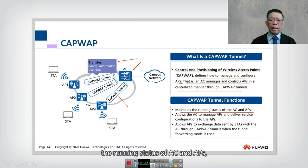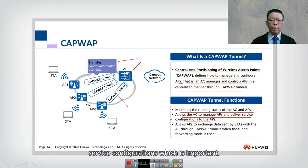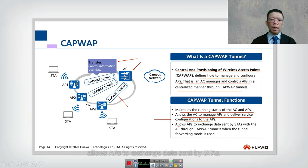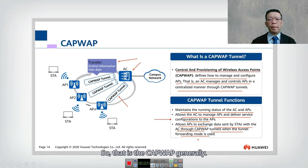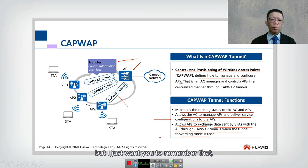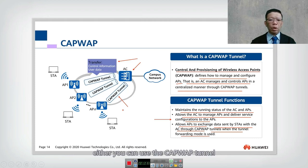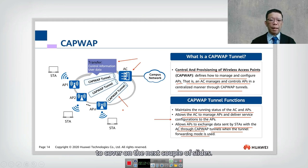CAPWAP maintains the running status of the AC and APs, allows the AC to manage APs and push service configurations, and allows APs to exchange data sent by STAs (stations) with the AC through the CAPWAP tunnel when tunnel forwarding mode is used. There are two modes: CAPWAP tunnel mode and non-CAPWAP tunnel mode, which will be covered in the next slides.